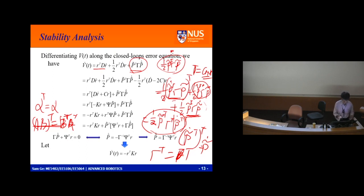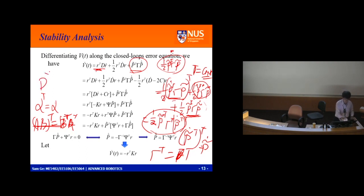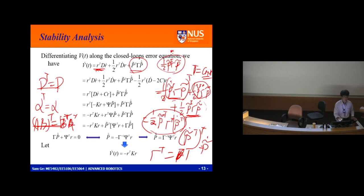For this one, you do the same process — you would have D-transpose equals D. One good thing here is: this corresponds to D-dot with terms that relate to r-dot — this D-dot left here from the skew-symmetric property.